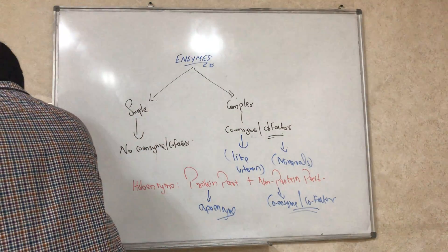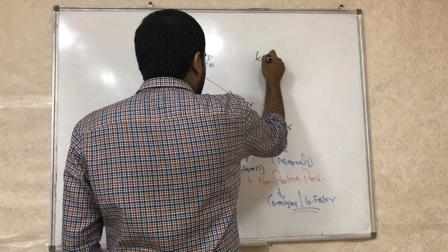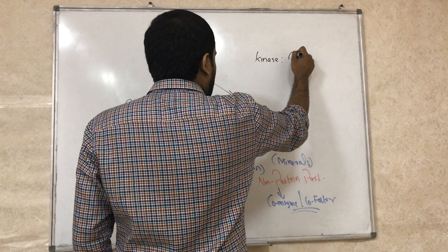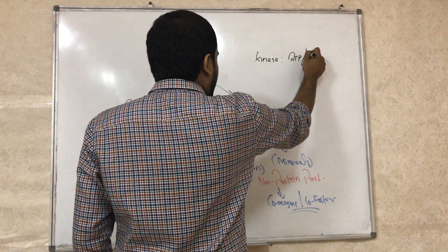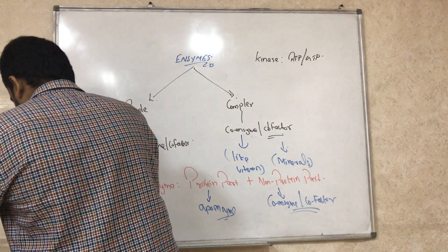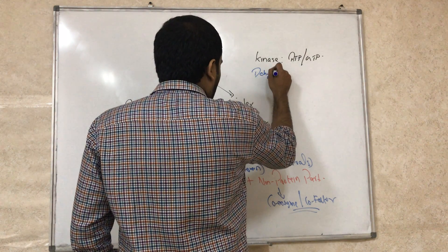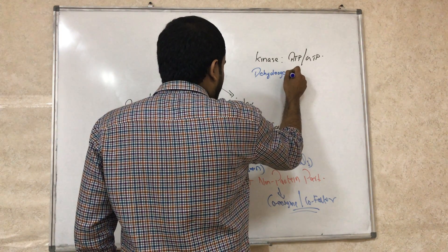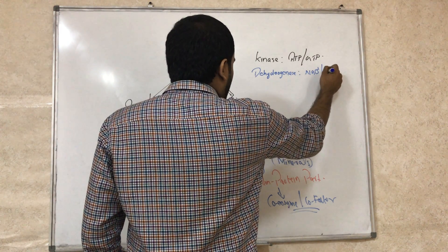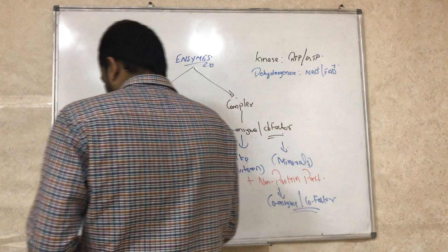Now we will see the important coenzymes. For kinase, the coenzyme is ATP or GTP. For dehydrogenase, the coenzyme is NAD⁺ or FAD⁺.